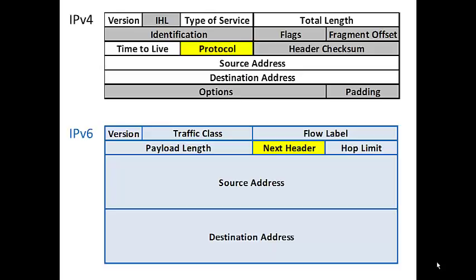The next header field may also point to an optional field in the payload. So if there are optional fields, there will be a note in the next header pointing to them. Header checksum is an error detection field — it checks if bits were lost in transmission of the packet header. This field has been eliminated in IPv6 because this function can be achieved in other layers of the OSI model.